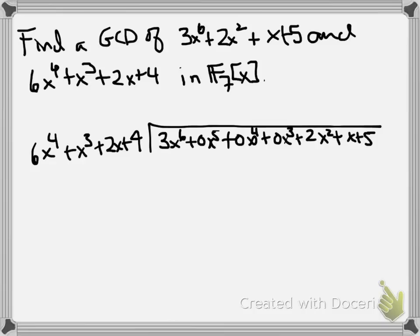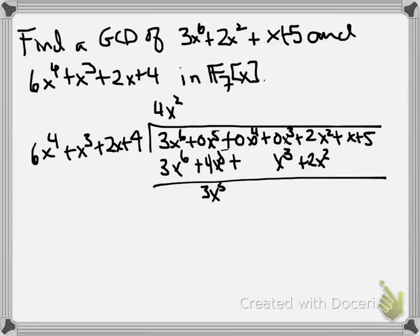Now we look and say, what do we need to multiply 6x^4 by to get 3x^6? Well, clearly we need an x^2. So how do we turn the 6 into a 3 in F_7? Well, we think about it for a minute and see that 6 times 4 is 24, which is 3 mod 7. We have 4x^2. Multiply that by the polynomial we're dividing in, line up matching terms, subtract.